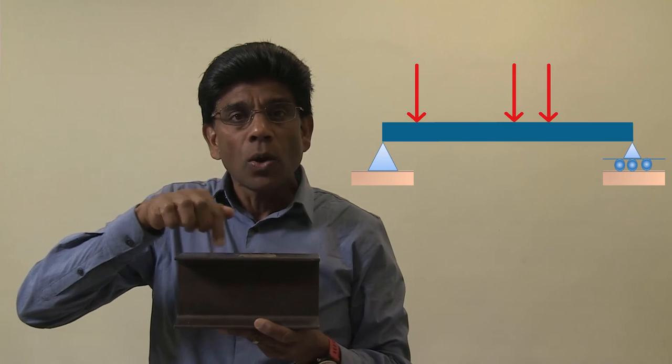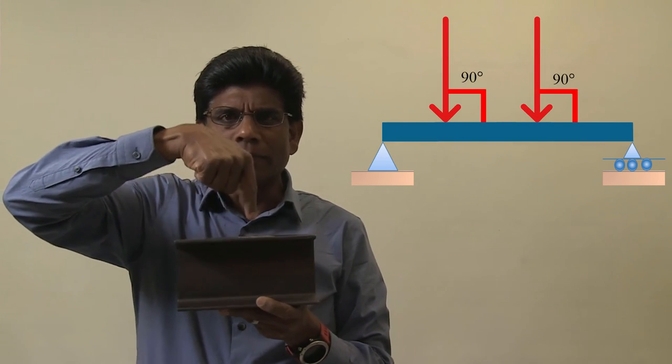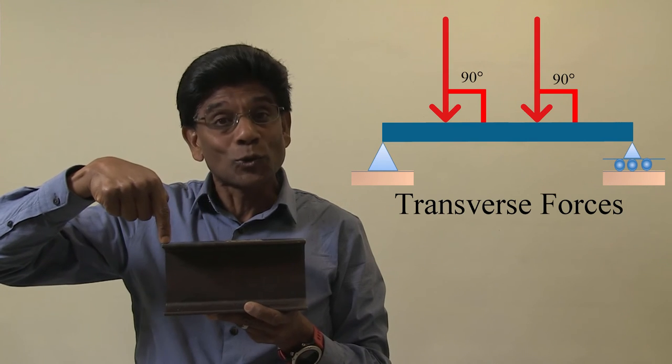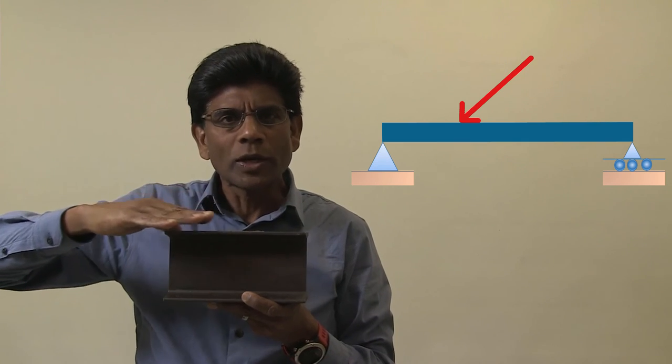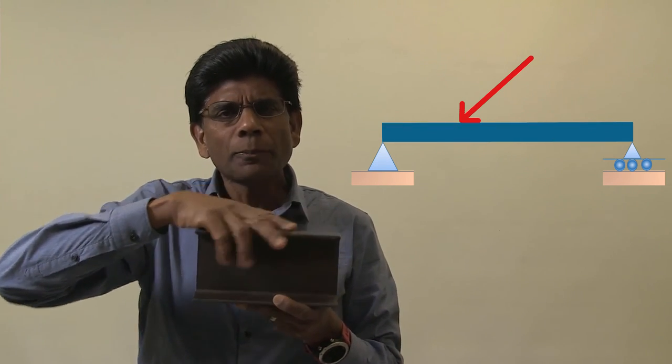Whatever the cross section or the material may be, beams are designed to withstand loads. These loads can be concentrated or distributed. In a typical beam, loads are applied perpendicular to the axis of the beam. These are all called transverse forces and they create shear and bending in the beams. If the loads are not at right angle to the beam, beams will also experience axial forces. The primary concern in the design of beams is finding the maximum shear force and the bending moment along the axis of the beam. And that's what we are going to do today. We will learn how to draw the shear force and bending moment diagrams of beams under different loading conditions step by step.